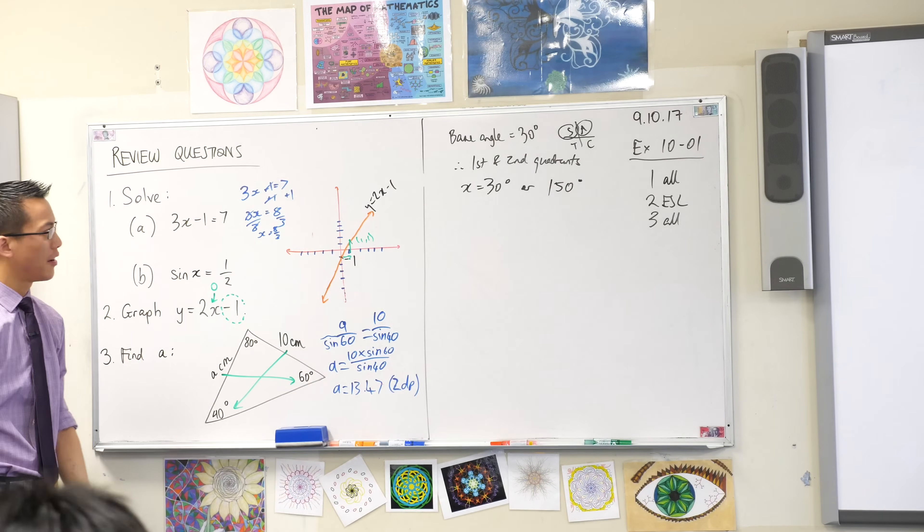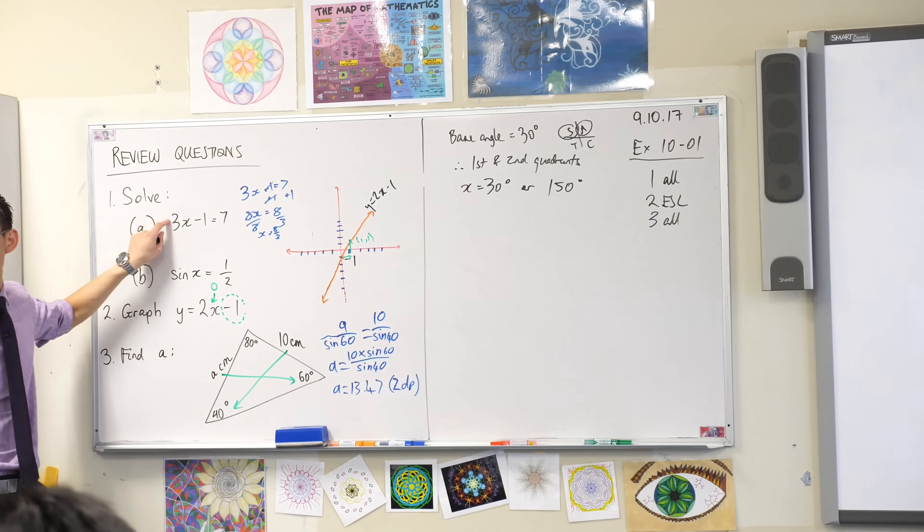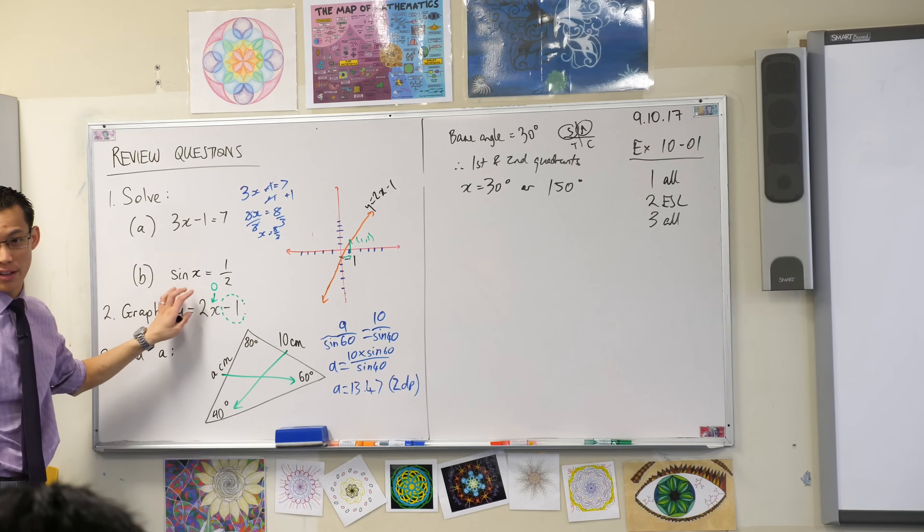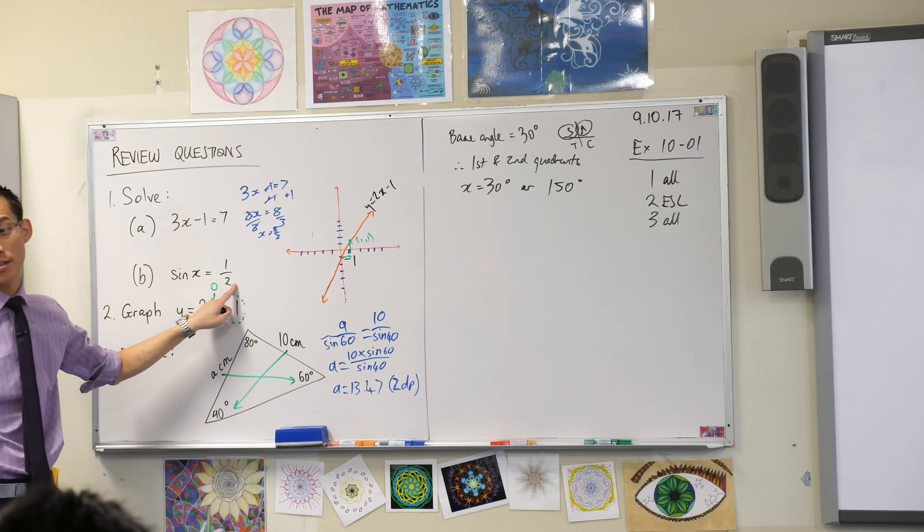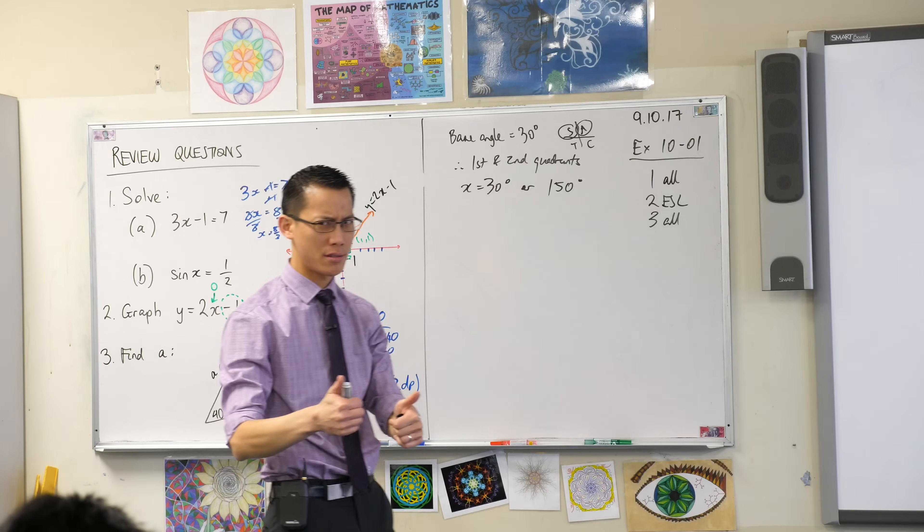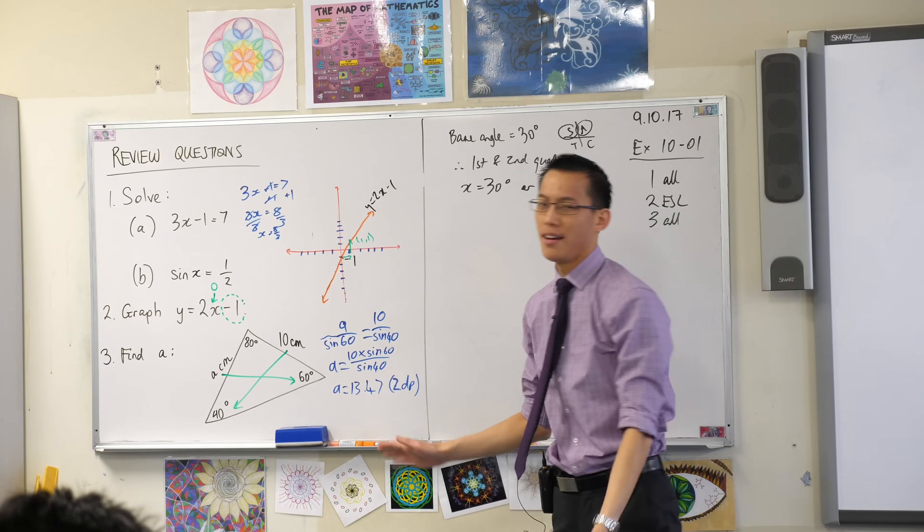And sure enough, just like every other equation in the world, you can test whether you got it right by putting your answers into the original equation. Sine 30 will give you this. Sine 150 will give you that again. Make sense? Yes? Sine 150 will give you that again. Okay.